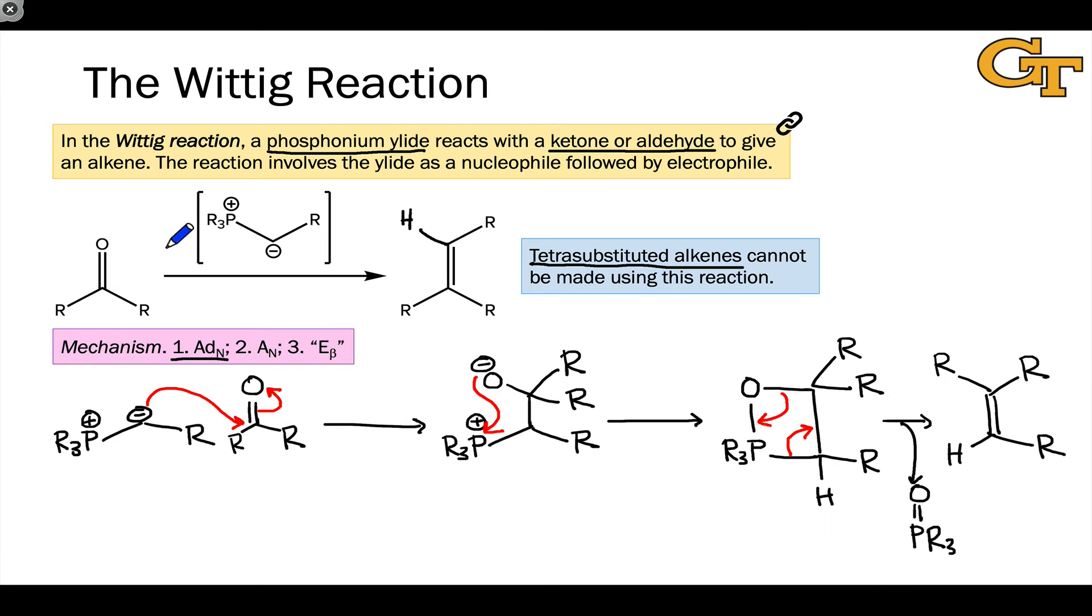On the whole, the Wittig reaction is pretty cool because it allows us to transform a carbonyl compound, specifically a ketone or aldehyde, into an alkene. It allows us to bring together two carbon fragments, one part of a carbonyl compound and one part of an ylide, and join them via two bonds to make an alkene. It's unique in that it makes two bonds in a single reaction between the same two atoms. It actually forges a double bond where there were no carbon-carbon bonds before in the carbonyl.